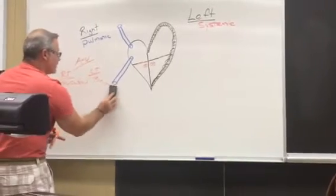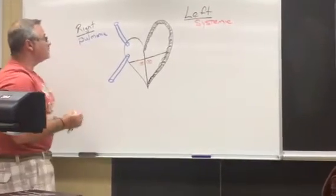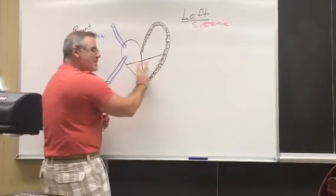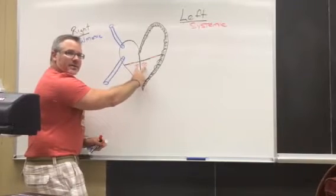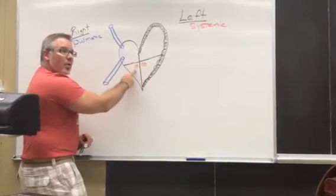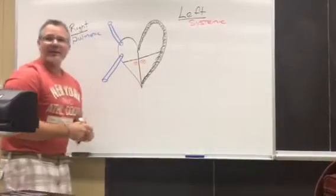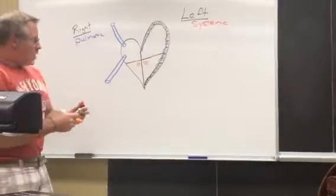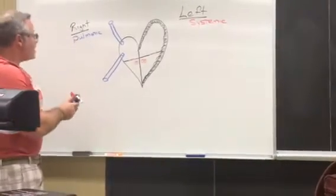The AV valve on the left side is called the bicuspid valve, also known as the mitral valve. The other two valves are called semilunar valves. The one on the right side is called the pulmonary semilunar, and the one on the left is called the aortic semilunar.